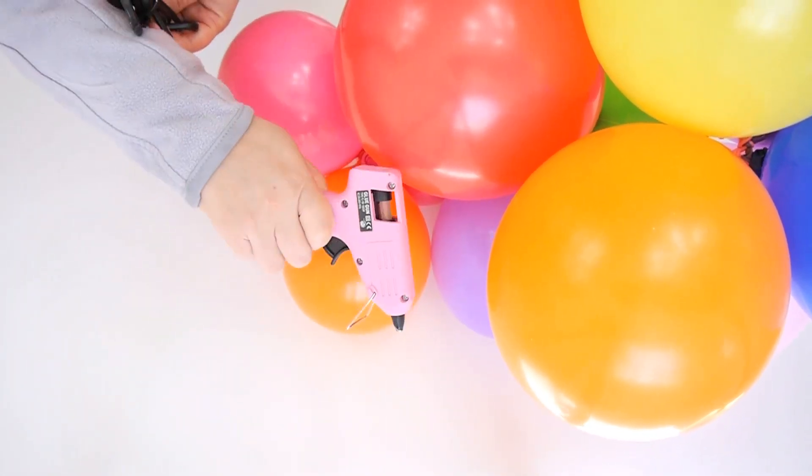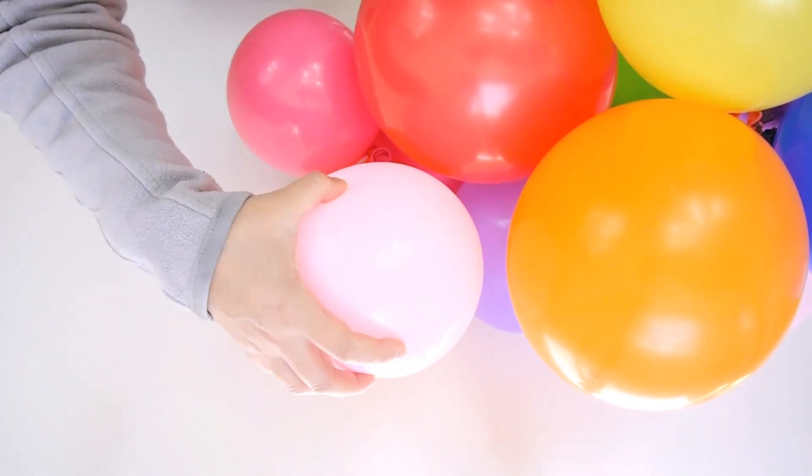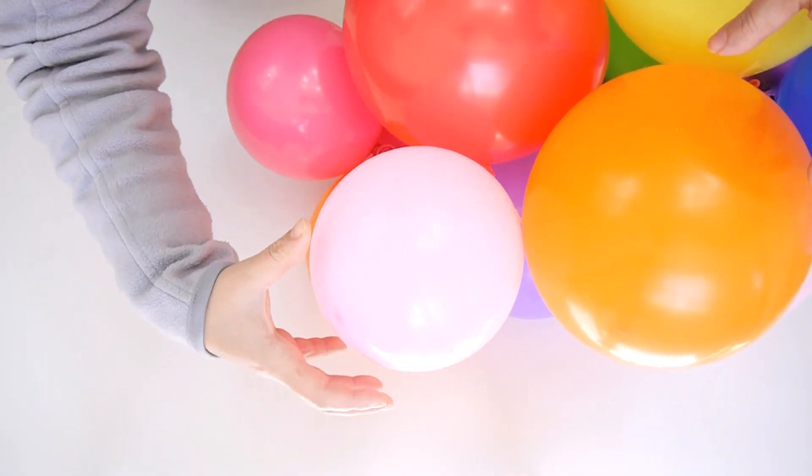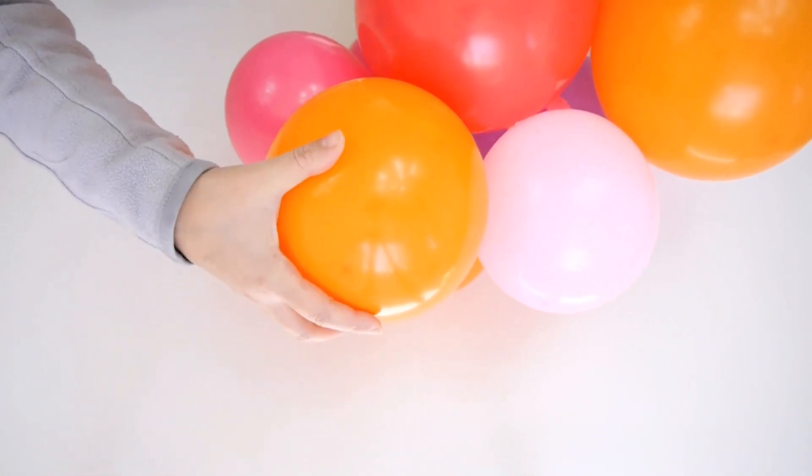You can vary the size of balloons and the colors to keep it interesting. Today I used glue dots just to make it quick and easy to show you, but you can use a low temperature glue gun like I said once the garland is in place and hanging on the wall, so you can see clearly where you need to fill the gaps.